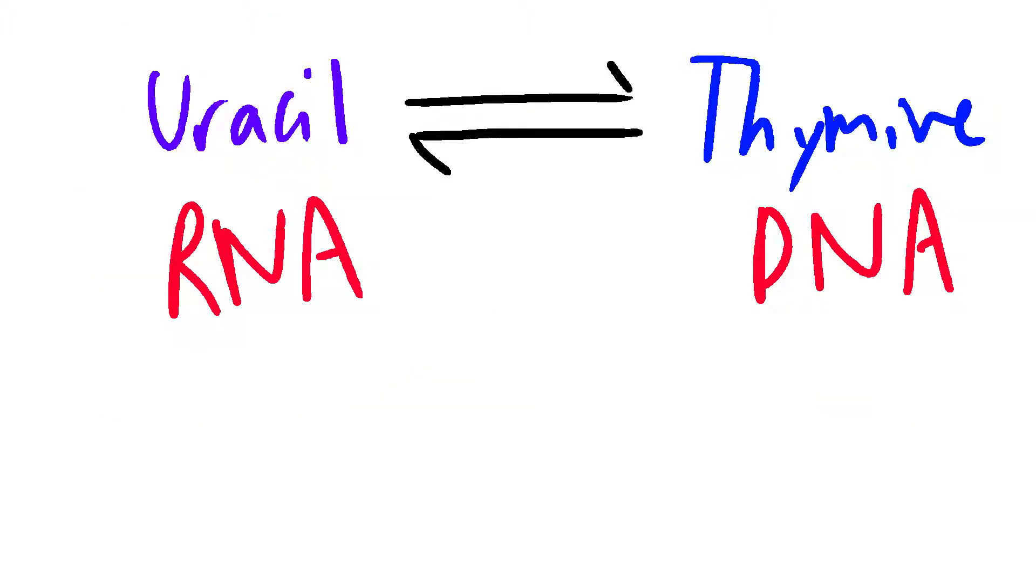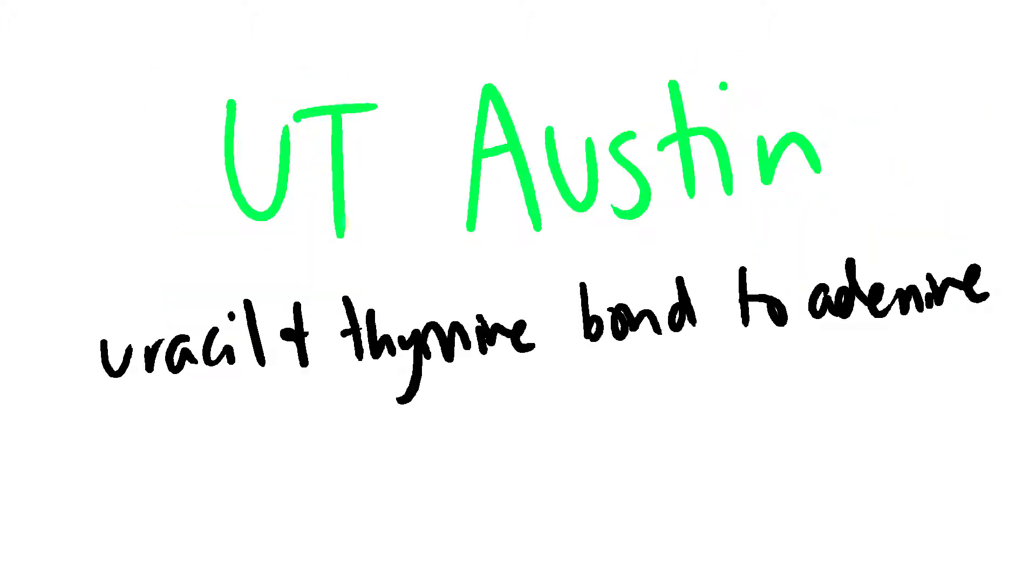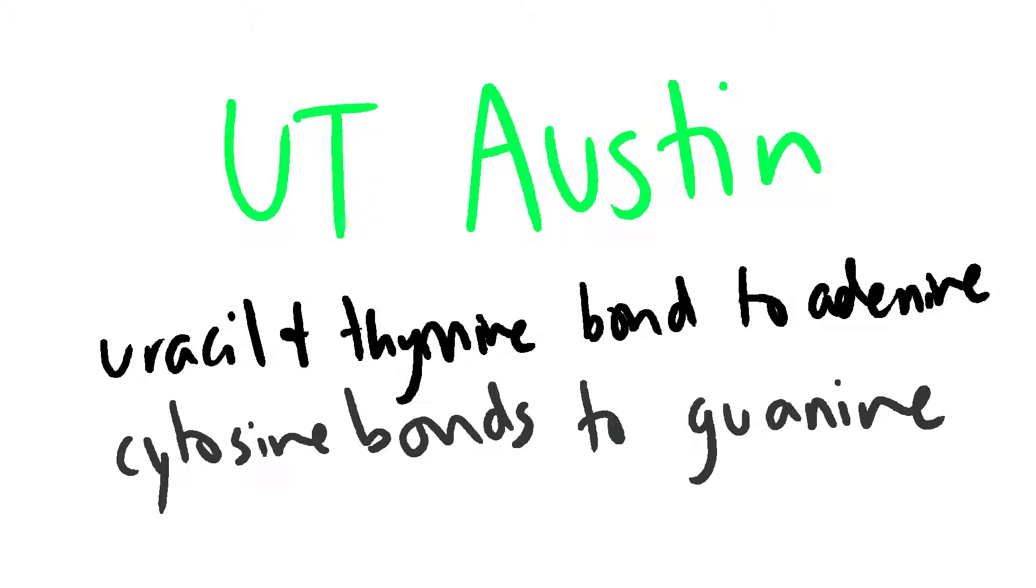Uracil is another pyrimidine, which replaces thymine in RNA. Uracil is the only base with an R, and so it's unique to RNA. To remember which bases pair with each other, remember EUT-Austin. Uracil and thymine both pair with adenine. This leaves cytosine to pair with guanine.